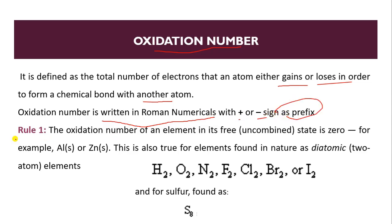There are many rules to give oxidation number. So we will discuss these one by one. First rule: The oxidation number of an element in its free state is zero. For example, aluminium and zinc.